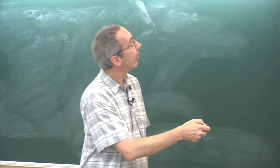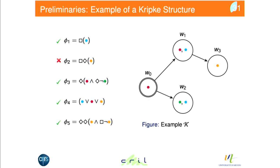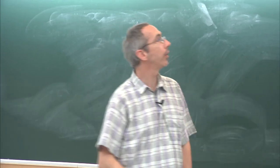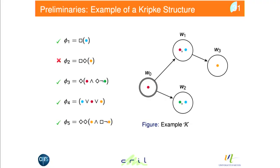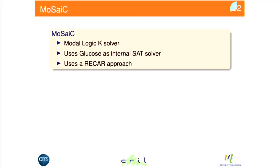For another formula — 'there exists a world where there is an accessible world with orange and in all reachable worlds there is no orange' — here it is not possible because the reflexive relation makes it orange. But if you remove the reflexive relation on W3, then the formula is satisfied.